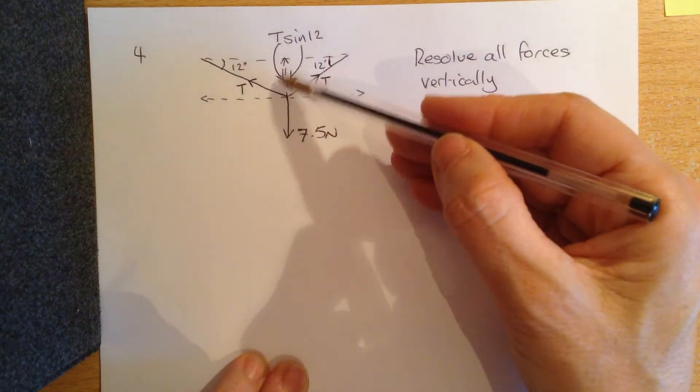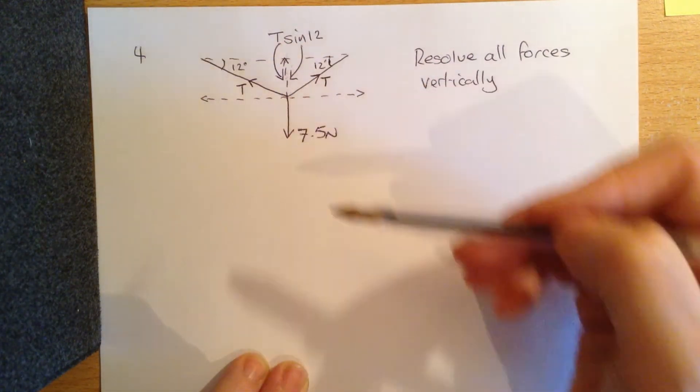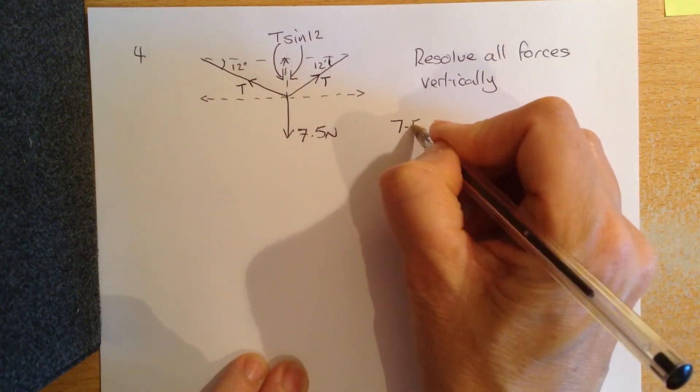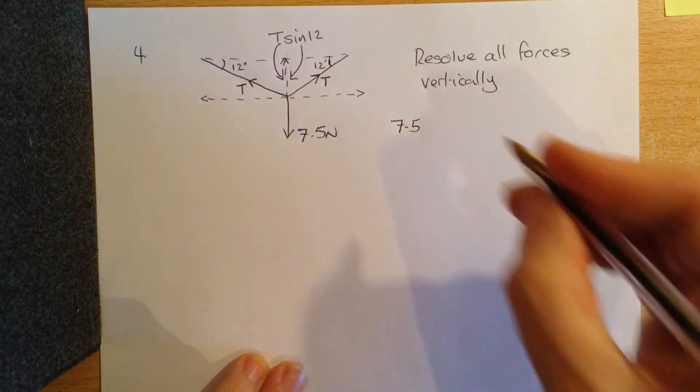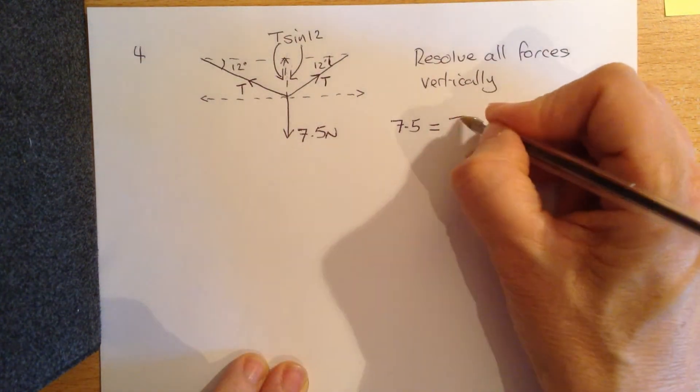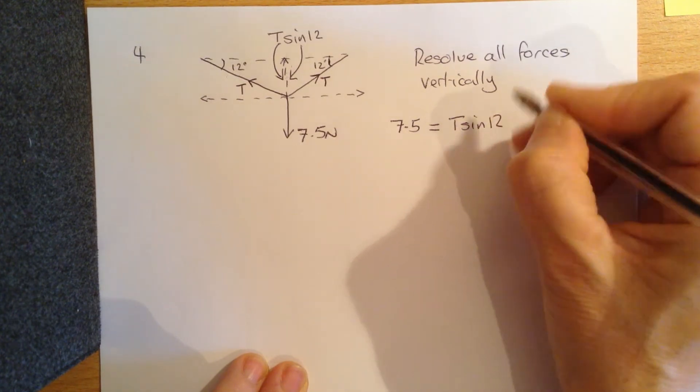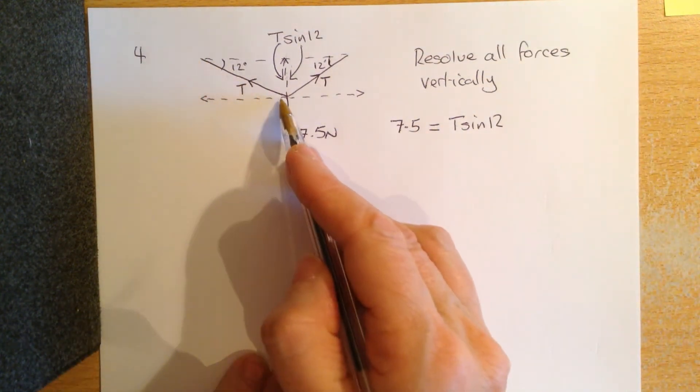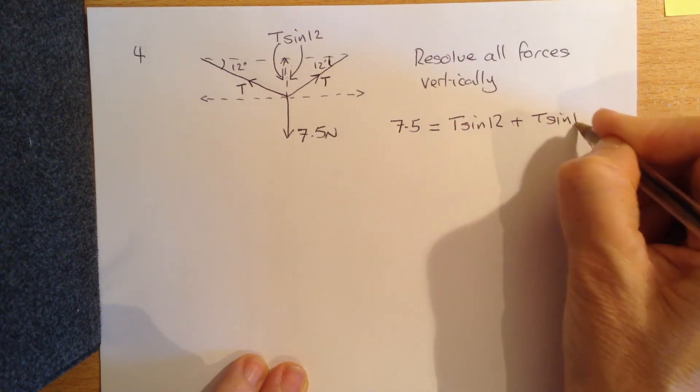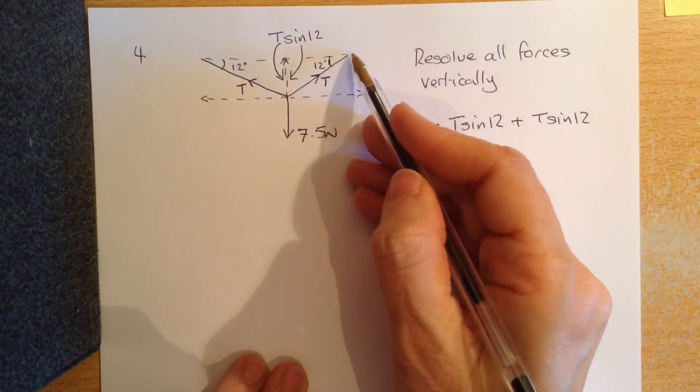So these two vertical components are balancing this downward one, so we would end up with 7.5, the downward force, is balanced in equilibrium with T sine of 12 of this side, plus T sine of 12 of this side.